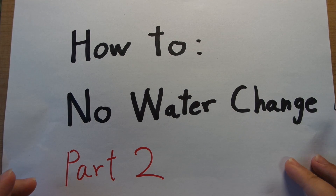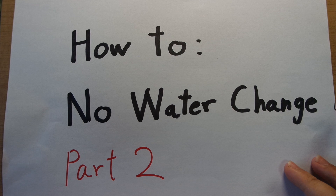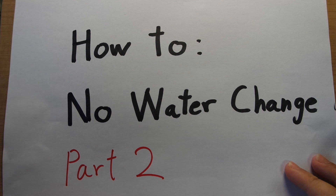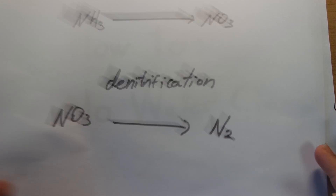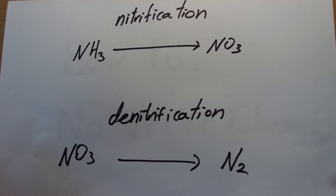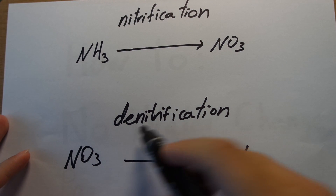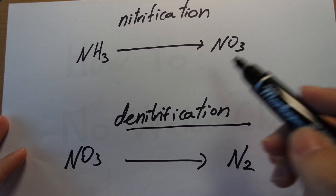Hello YouTube, I'm Jay and this is going to be part 2 in my series on how to build no water change tanks. In this part I'm going to teach you the process of denitrification and how you can get rid of those pesky nitrates that essentially mean you need to do water changes because of them. The process of getting rid of them is called denitrification.